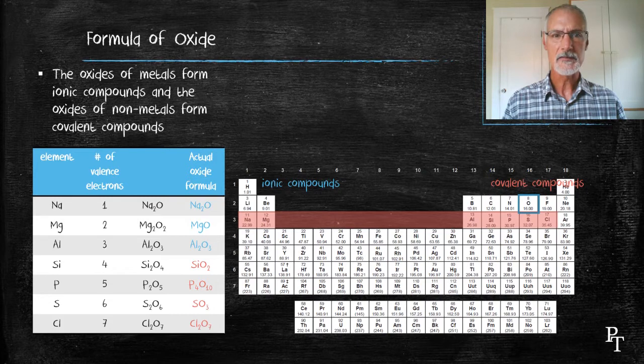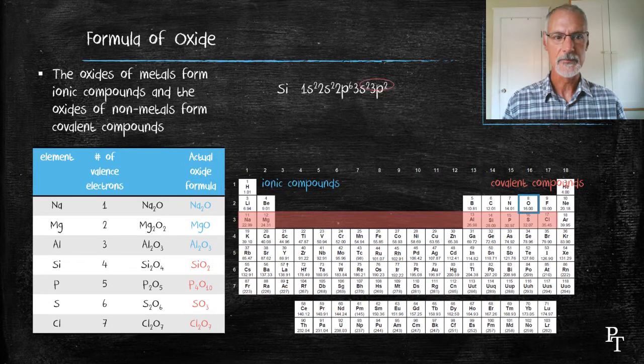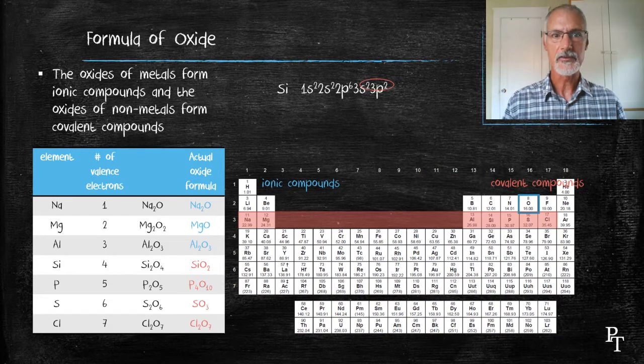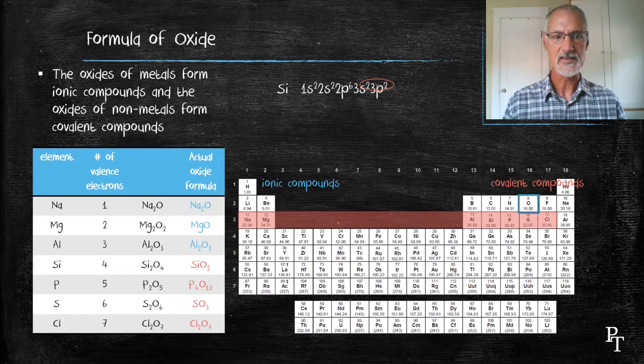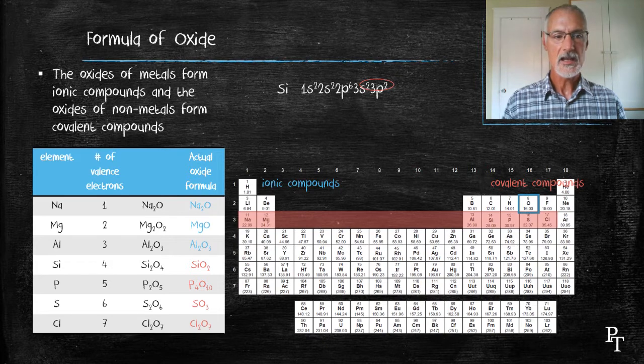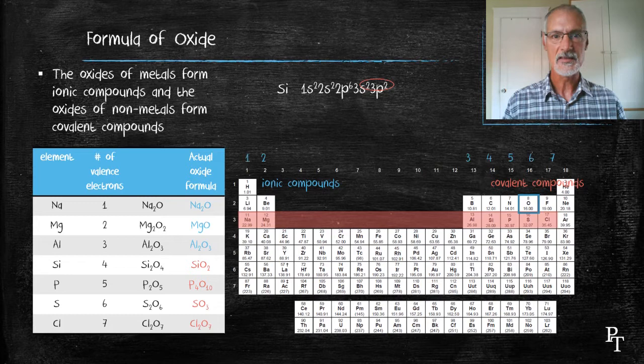First off, I'm going to identify the number of valence electrons that each of the elements have in period number 3. You might recall that valence electrons are those in the highest energy level. So here, in the case of silicon, for instance, the 3s2, the 3p2, those constitute the valence electrons. As we move across the table, we can see that the number of valence electrons in period 3 elements increases sequentially, 1 through 7.